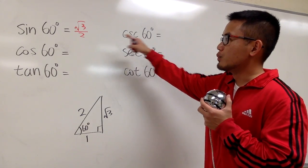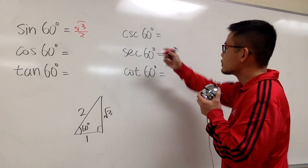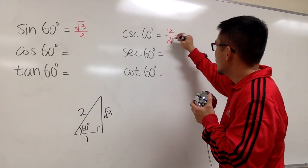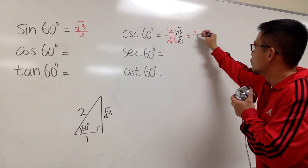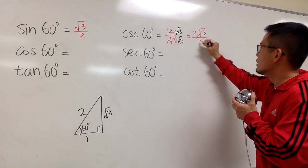And for cosecant of 60 degrees, we just take that and do the reciprocal. So, we have 2 over square root of 3. Of course, let's go ahead, rationalize the denominator. So, we have 2 square root of 3 over a regular 3.